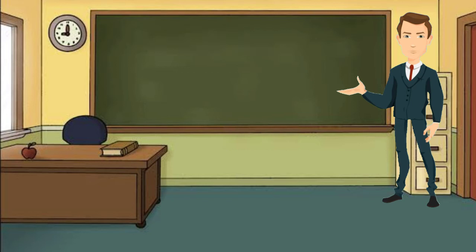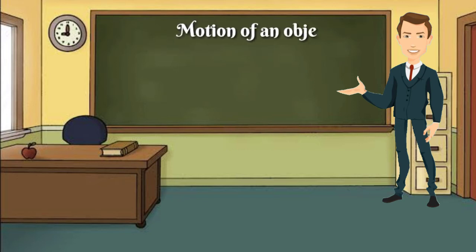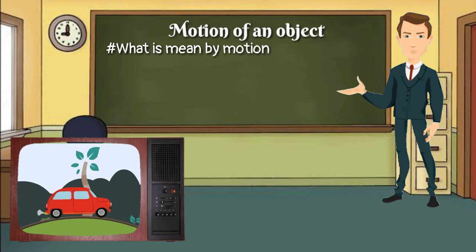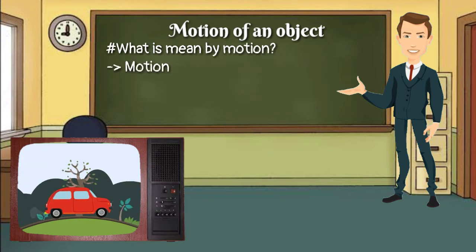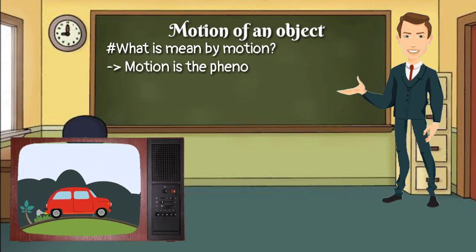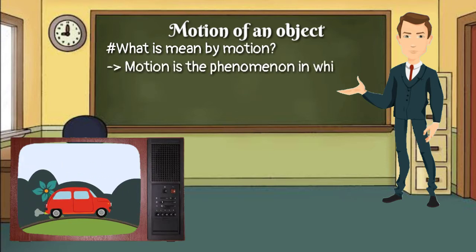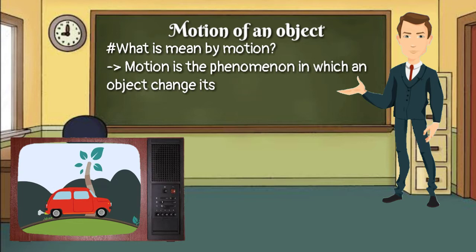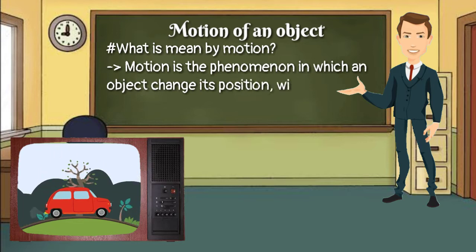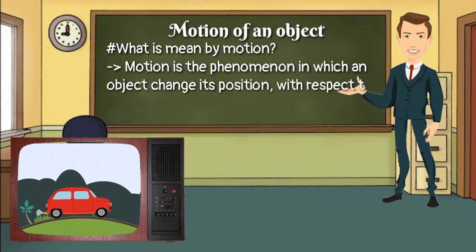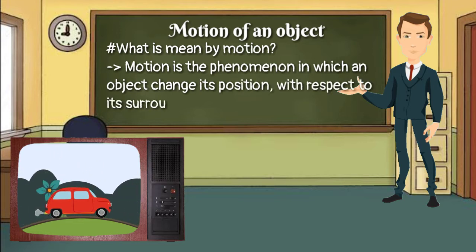The first point is motion of an object — what is meant by motion. Motion is the phenomenon in which an object changes its position over time with respect to its surroundings.